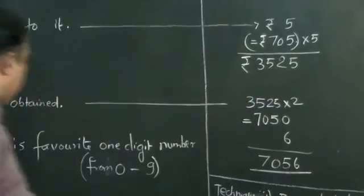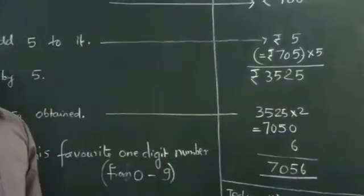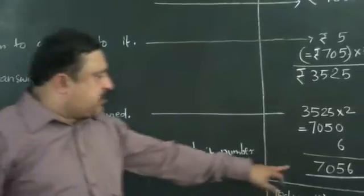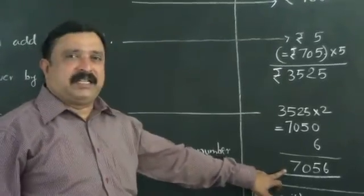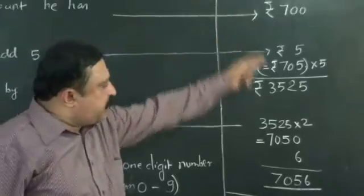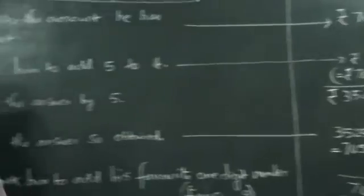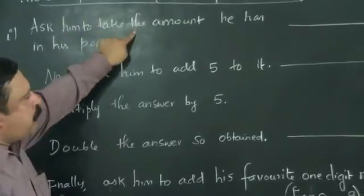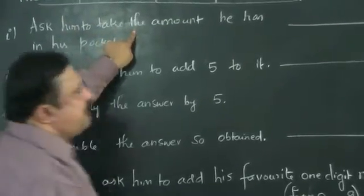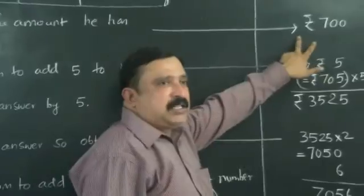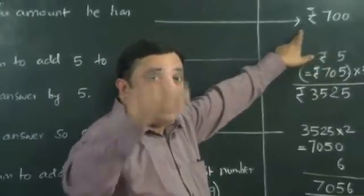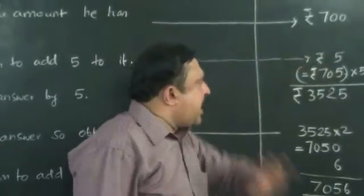Okay. Now you ask him to report this final number to you. Now he would say to you that this final number is 7056. So whatever the series of operations he has done, he just counted the money. You ask him to take the amount and let him tell himself that he has got 700 rupees in his pocket. Then you added 5 rupees.